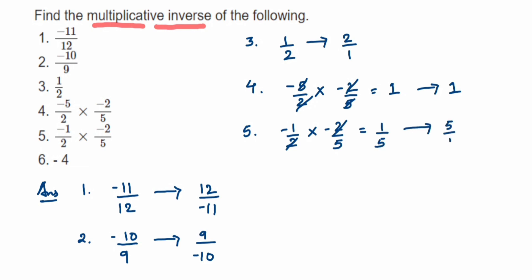The last one, the sixth problem, is -4. We take the reciprocal, which can be written as 1/(-4), or sometimes people write it as -1/4 with the negative sign in the numerator. Both answers are the same — the negative sign indicates the whole number is negative, so it's fine whether you put the negative sign in the numerator or denominator.